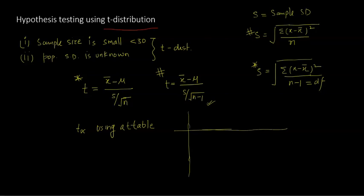I'm drawing a rough sketch of the t-table. You have degrees of freedom listed on the left — 1, 2, 3, and so on — up to 30, since we are dealing with small samples. Across the top, you have two-tailed and one-tailed after the alpha value — TT for two-tailed and OT for one-tailed — along with the corresponding alpha values. The combination of degrees of freedom, test type, and alpha value gives you a t-alpha value.